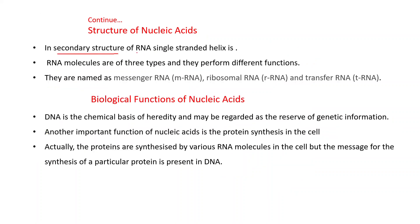In the secondary structure of RNA, a single-stranded helix is present. So again, this is another structural difference between DNA and RNA: DNA has a double-stranded helix structure while RNA has a single-stranded helix structure. RNA molecules are of three types: messenger RNA (mRNA), ribosomal RNA (rRNA), and transfer RNA (tRNA).